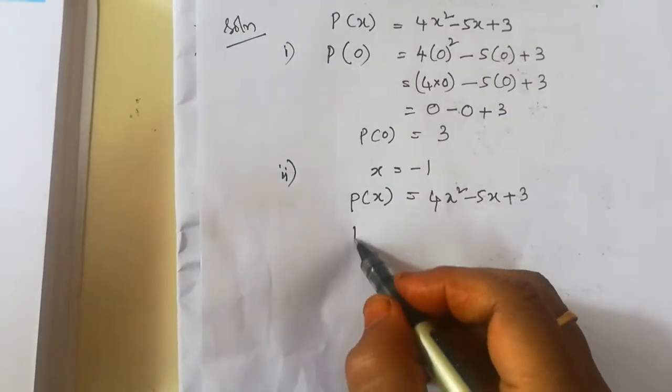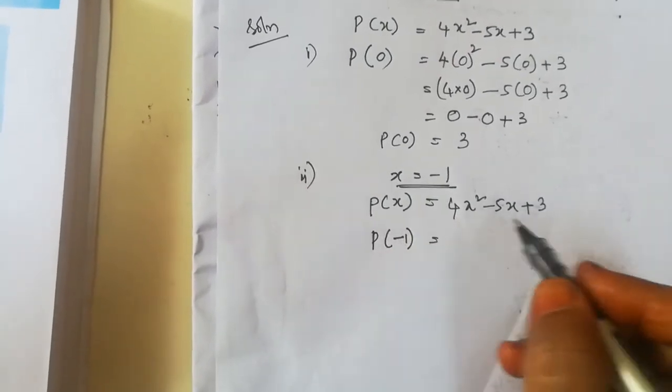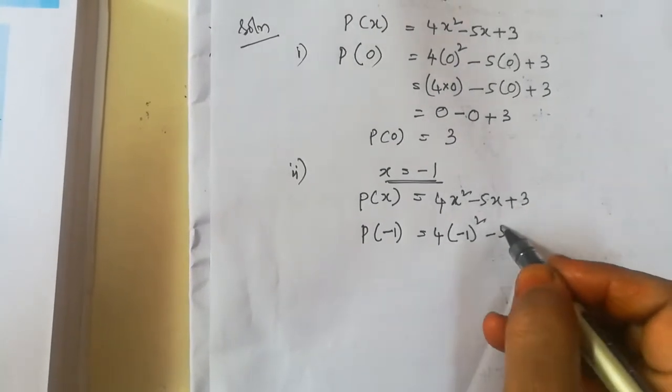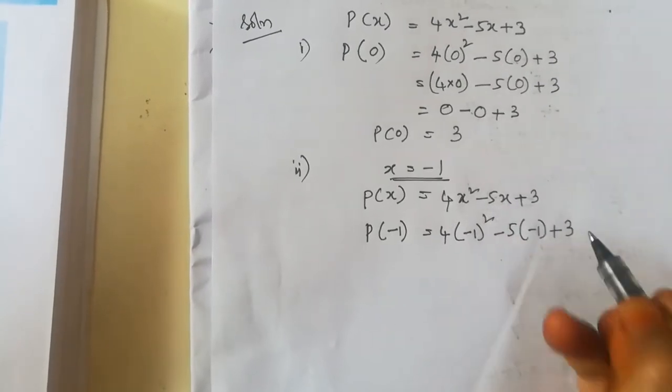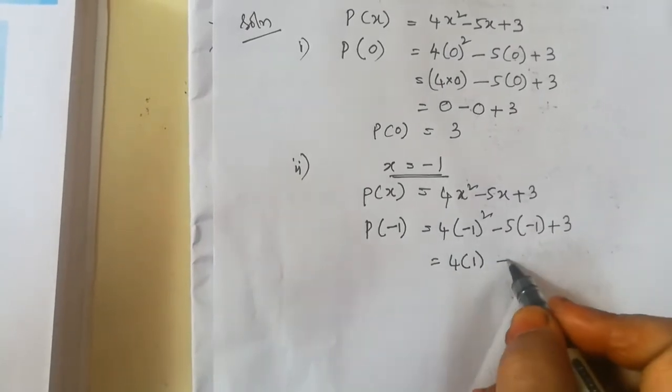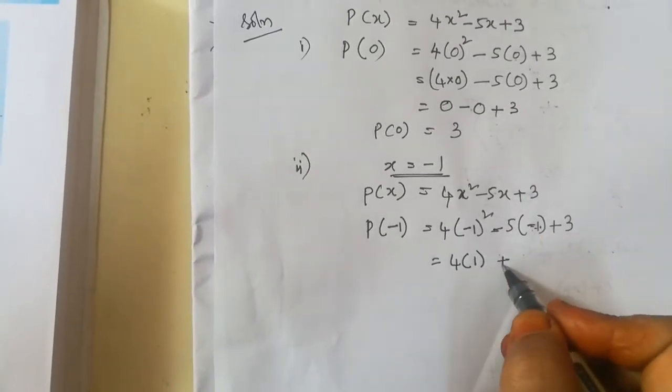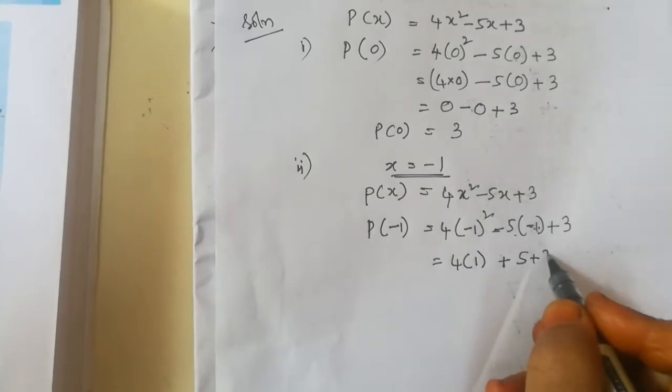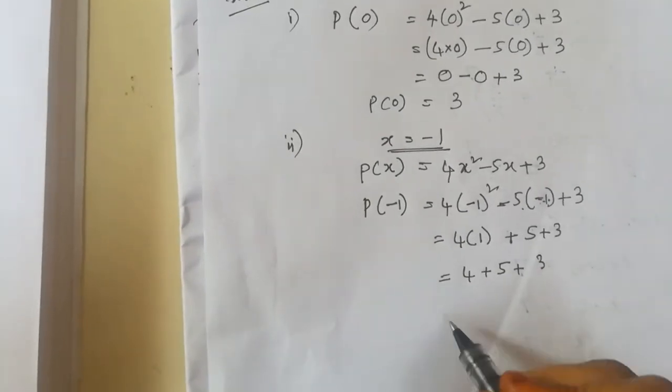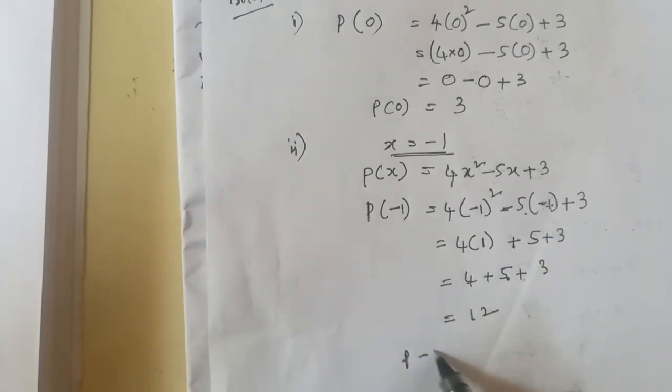Now we find the value when x is minus 1. We substitute minus 1 in place of x: 4 times (-1) squared minus 5 times (-1) plus 3. Minus 1 squared is 1, and minus 5 times minus 1 gives plus 5. So we get 4 times 1 plus 5 plus 3, which is 4 plus 5 is 9, and 9 plus 3 is 12. So P of minus 1 equals 12.